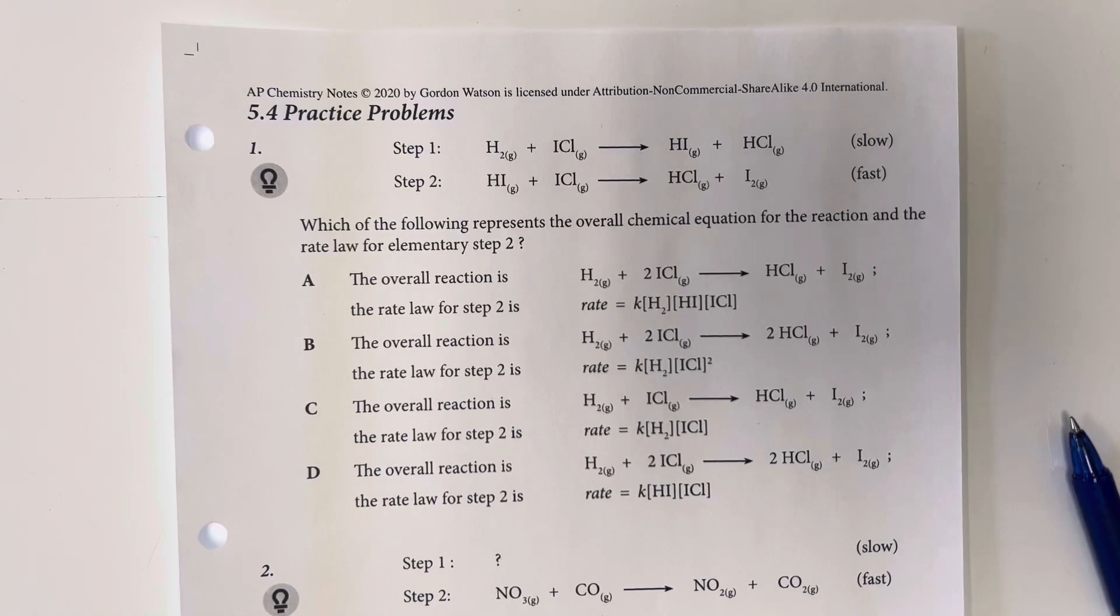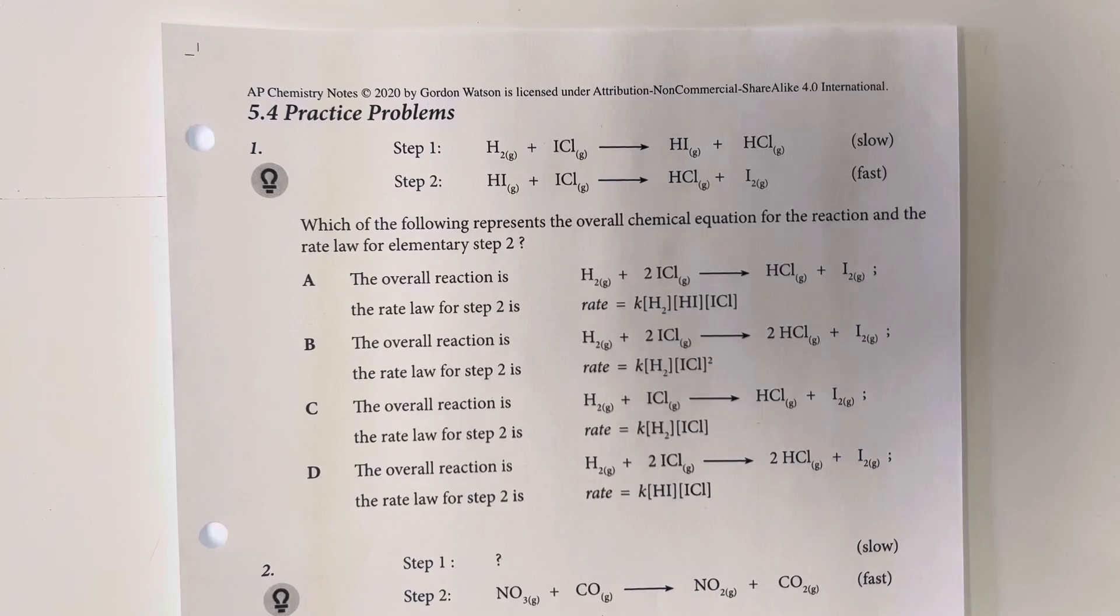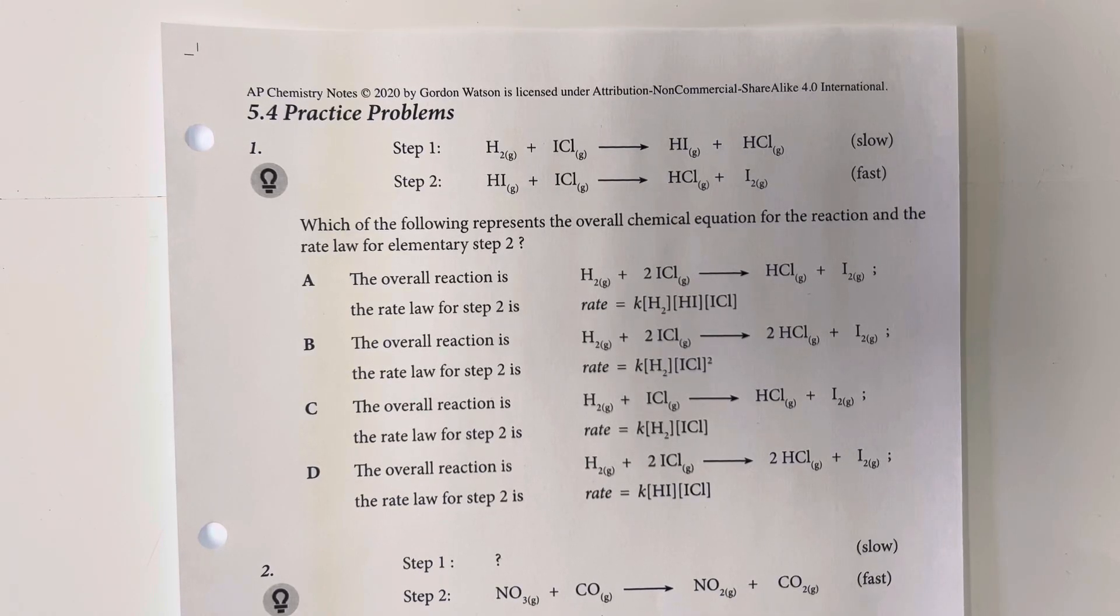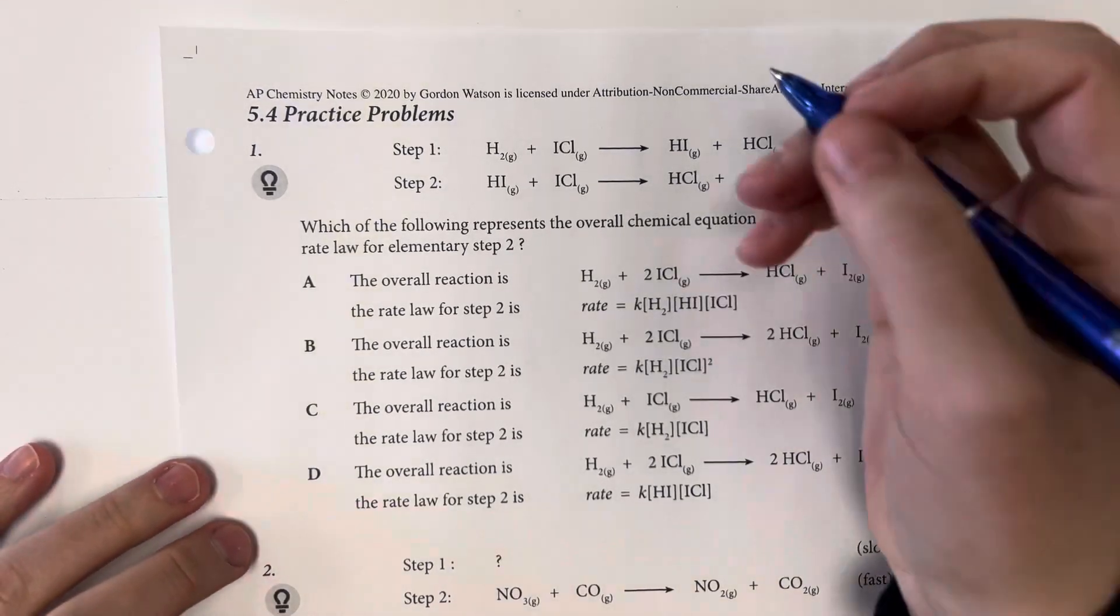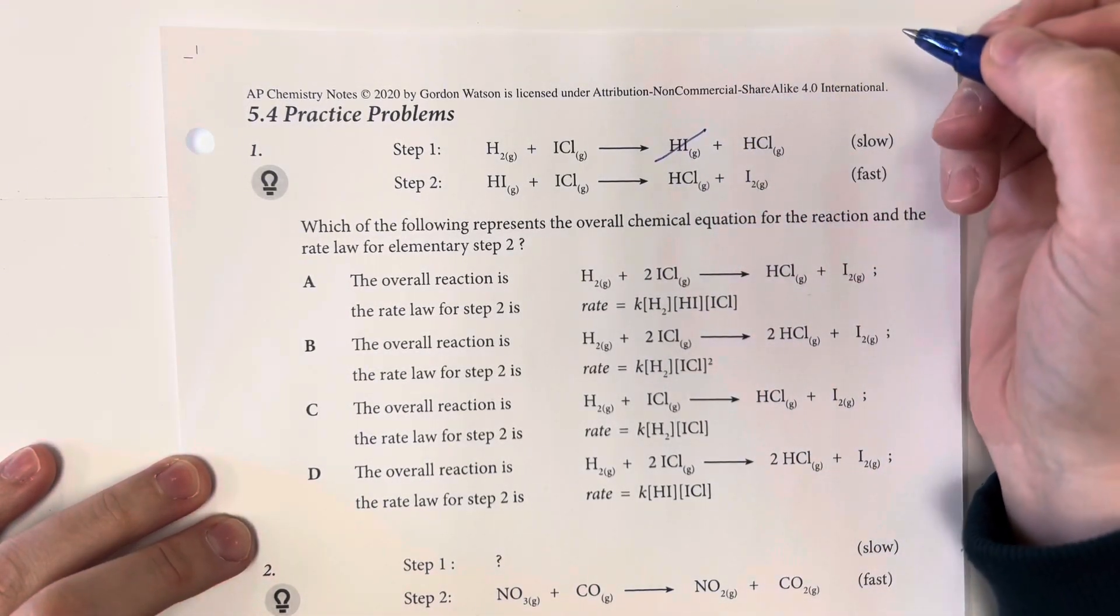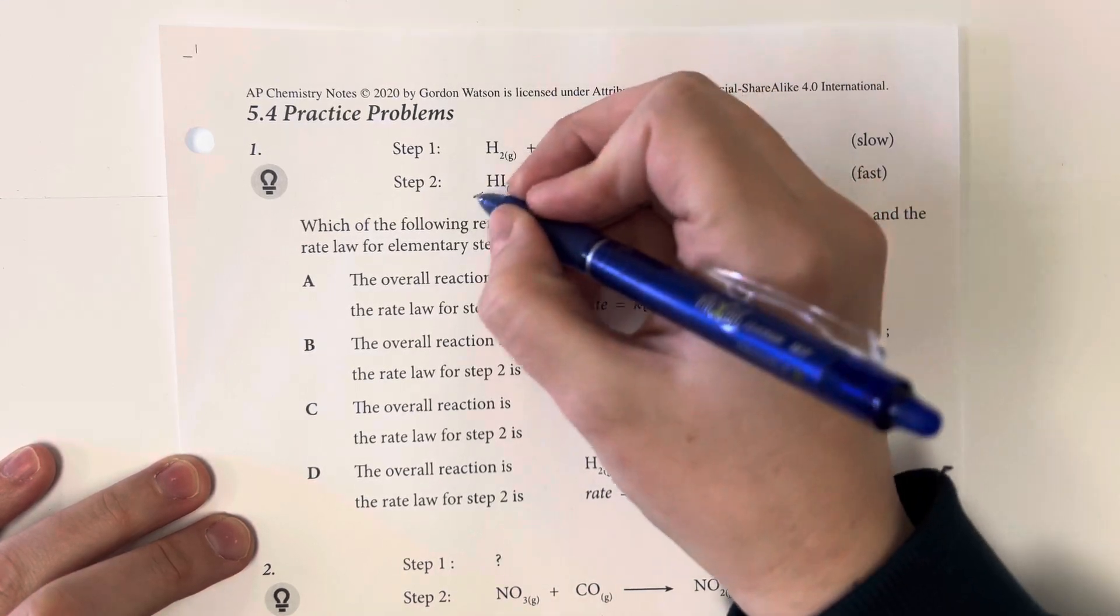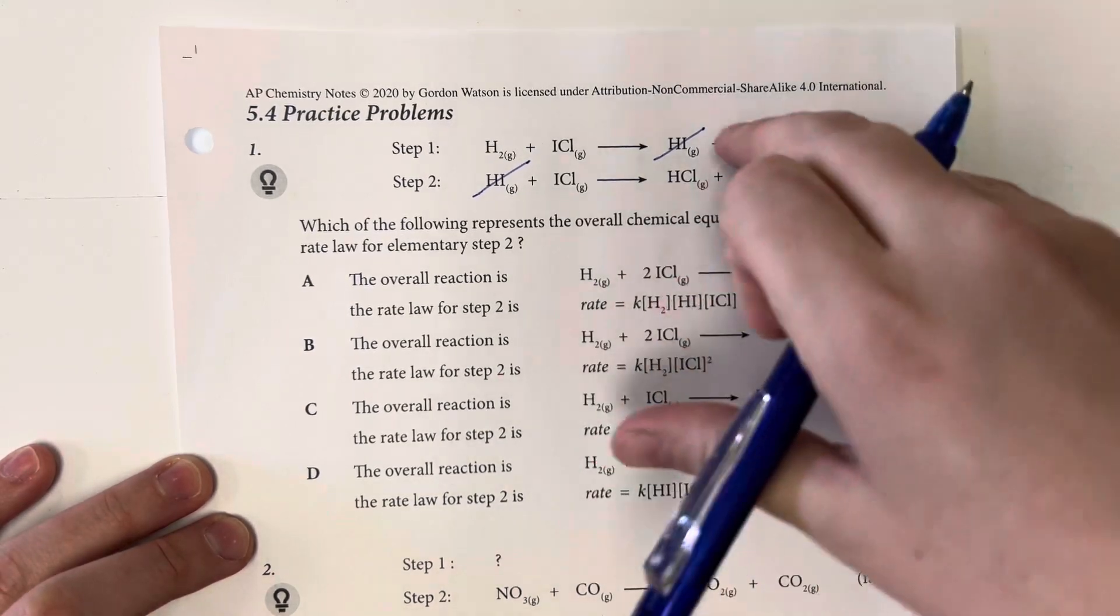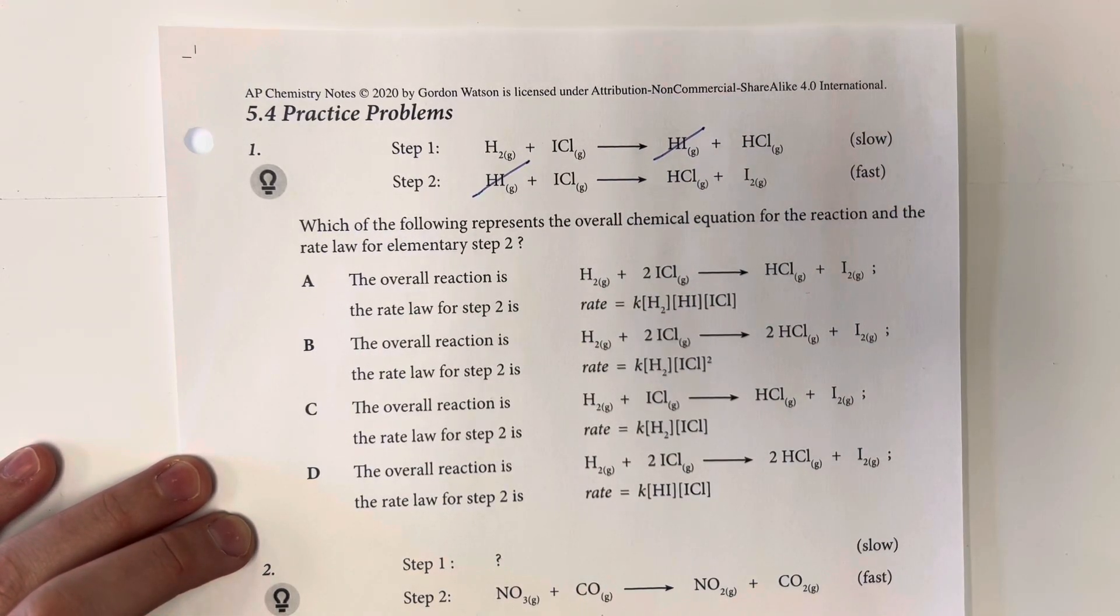for the overall reaction, we are just going to keep things that only appear on one side of the equation here. So anything that appears twice is going to be eliminated. If it appears on the left-hand side and on the right-hand side, that means it is an intermediate step and so that's going to go away.